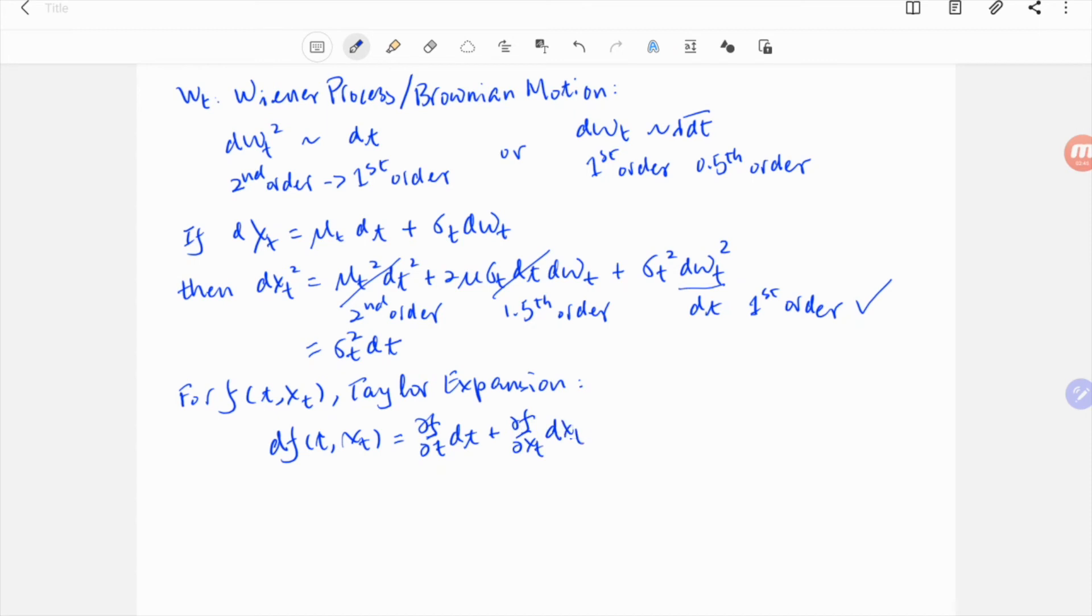So when we expand df into Taylor series, we have the first order dt term, the first order in dxt term, and then second order in dxt squared term.